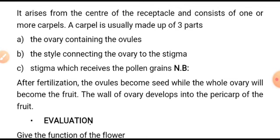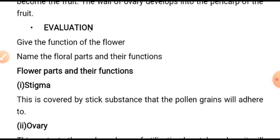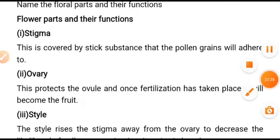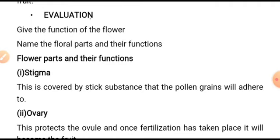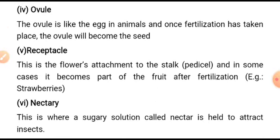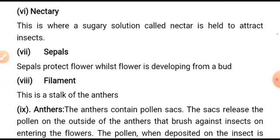Evaluation on flower: give the function of the flower and name the four parts and their function — calyx, corolla, androecium, and gynoecium. At the next lesson we will discuss the different parts of the flower and their function, starting with the stigma, ovaries, style, receptacle, nectaries, sepals, filaments, and anthers.